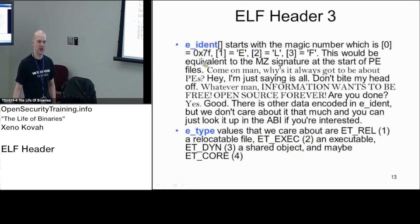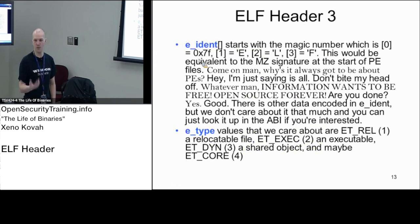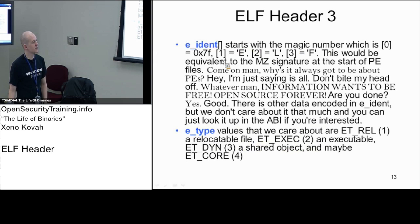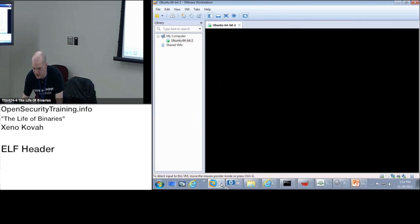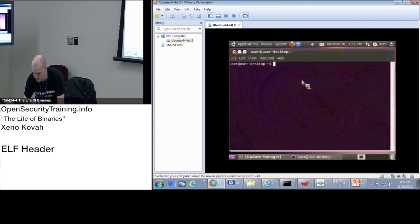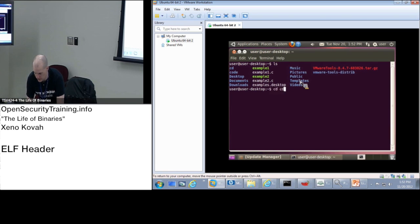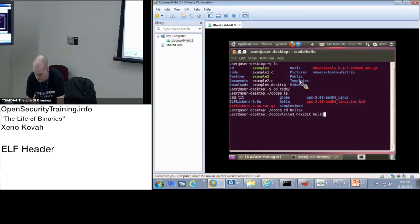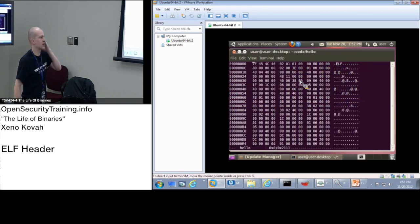e_ident, right at the very beginning — this is the equivalent of e_magic back in the DOS header. It's just a string that should always be at the very beginning of the file; otherwise it's not an ELF file and won't be processed by the OS loader. The 0th entry will be 0x7f and the 1st through 3rd entries will be 'ELF'. When looking at a hex view of a file, you should always see 7f followed by ELF as the first bytes of a legitimate ELF file.